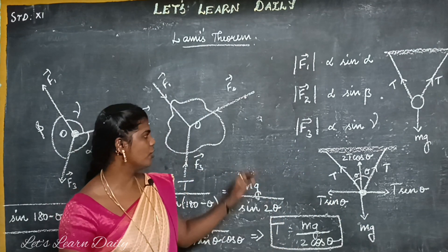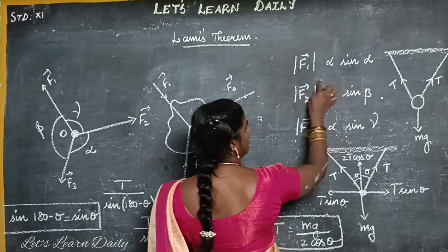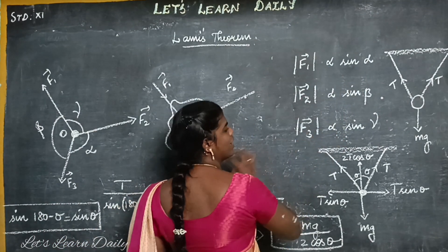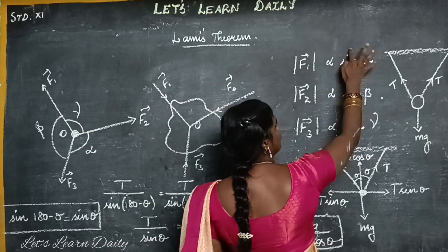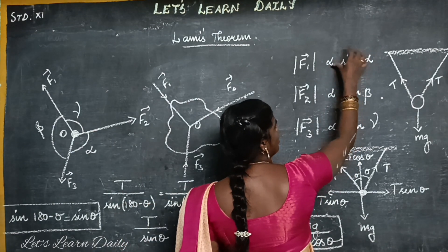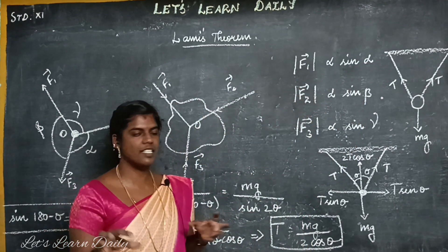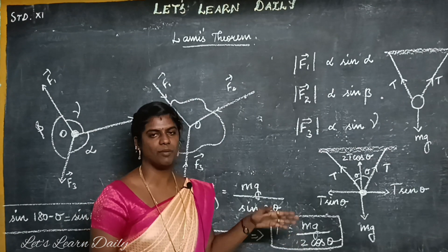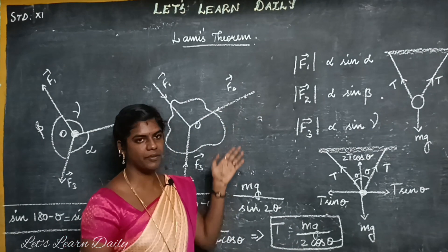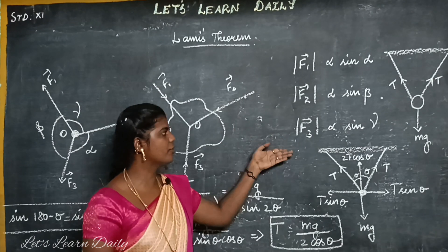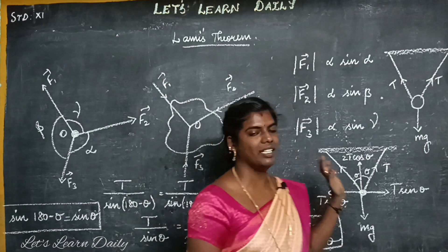So, if you want to note this in your book: the magnitude of F1 divided by sin alpha equals the magnitude of F2 divided by sin beta equals the magnitude of F3 divided by sin gamma. This is Lami's Theorem.